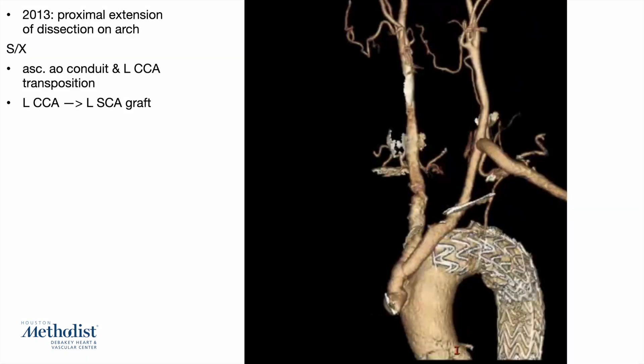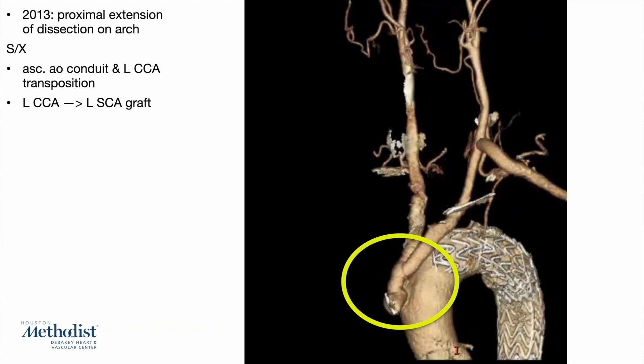In 2013, the dissection extended proximally and caused malperfusion to the left subclavian and common carotid arteries. With a surgical procedure, the left CCA and innominate arteries were regrafted onto a conduit graft coming off of the ascending arch. A graft was also placed from the left common carotid to the left subclavian artery to ensure perfusion to the left arm. The conduit on the ascending aorta now provides flow to both subclavian and carotid systems, making it a crucial site of anastomosis.